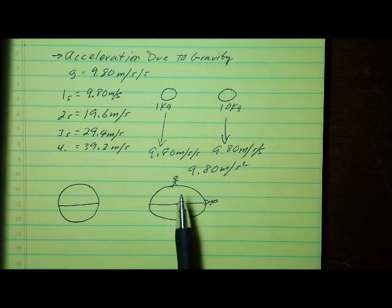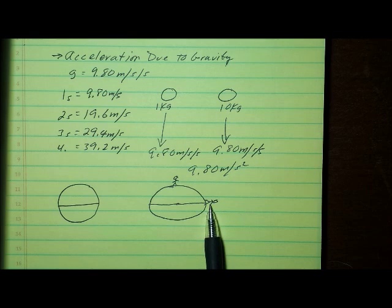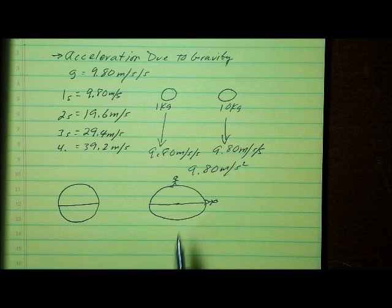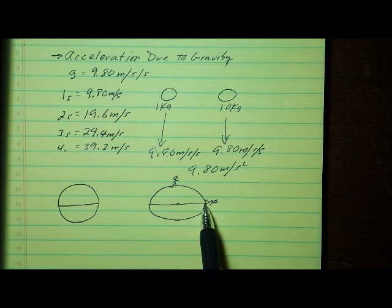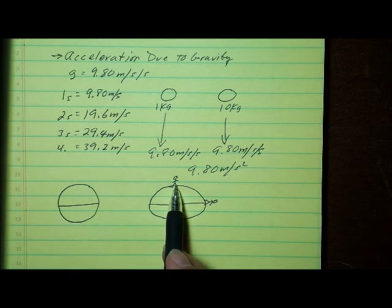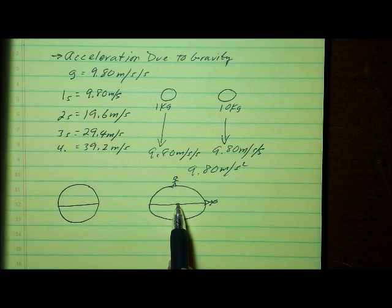Also remember that the acceleration due to gravity actually depends on where you are on the surface of the Earth — it varies slightly. The acceleration due to gravity is less if you're at the equator because you're further from the center of mass of the Earth. And the acceleration due to gravity is slightly greater if you're at the poles because you're closer to the center of mass of the Earth.